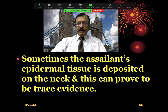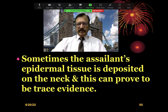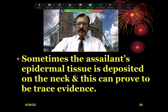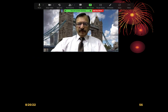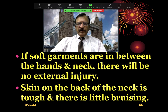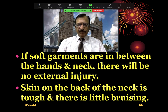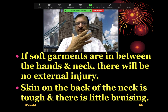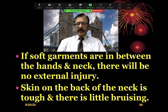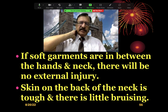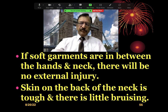Sometimes the assailant's epidermal tissue is deposited on the neck, and this can be proved as trace evidence. It can be collected, and this epidermis of the assailant can act as trace evidence to identify the person. If soft garments are between the hands and neck, there will be no external injury — if there are soft garments intervening, the marks will be less or absent. Similarly, the skin on the back of the neck is tough, so there will be little bruising in that area.